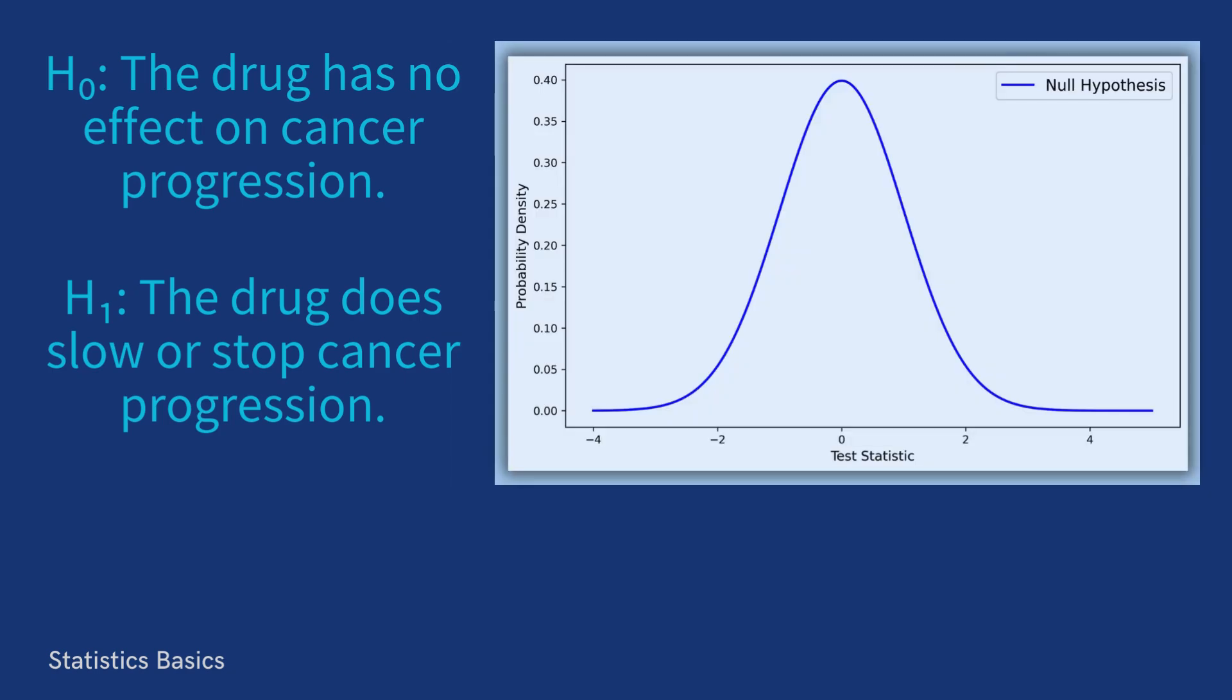This is the probability distribution of a test statistic assuming the null hypothesis is true, which states that the drug has no effect. In other words, it shows us what kind of results we would expect to see by random chance alone if the drug truly had no effect.